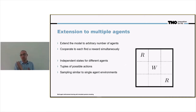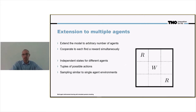Here we see an example of a multi-agent grid that we considered. It's a three-by-three grid. We have a wall in the middle and we have two rewards located at the upper left and at the lower right corner.